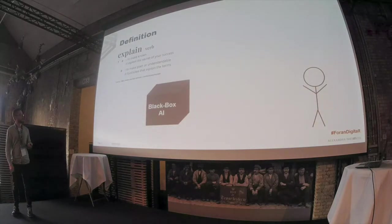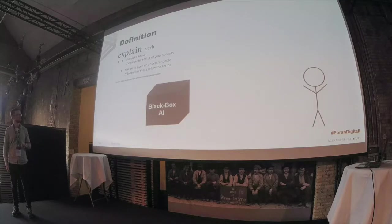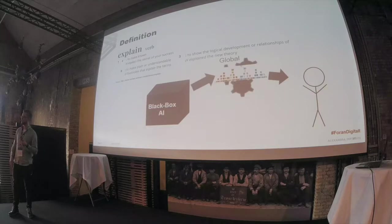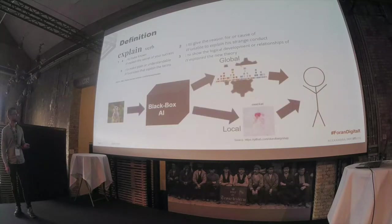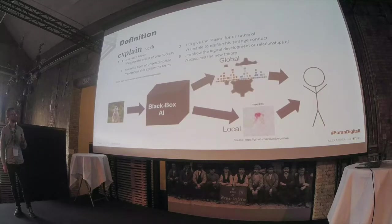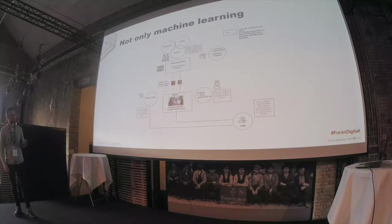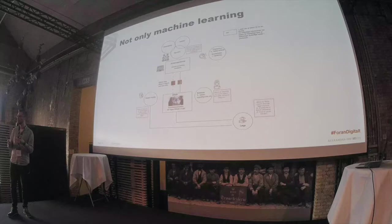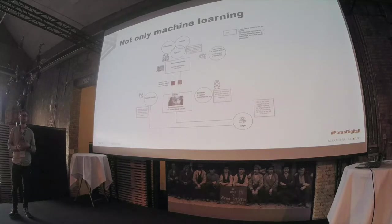What is explainable AI? It is about explaining the machine learning model or AI we've trained. Usually you separate two different ways of explaining: a global explanation where you try to explain the whole logic of the model, or a local explanation where you try to explain a specific decision made by the model. It can also be about understanding where in the pipeline explanations are needed — not only technical explanations of the model, but also explanations about what data was used to train it and what the training process was.